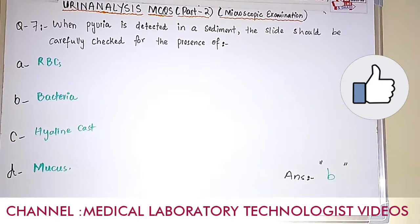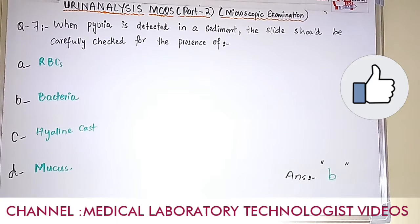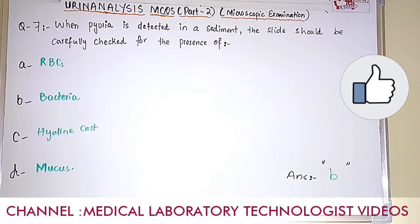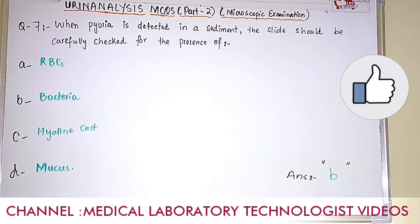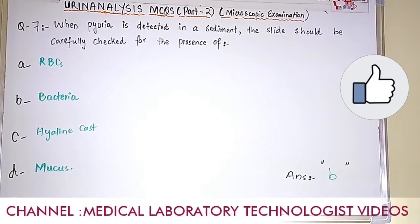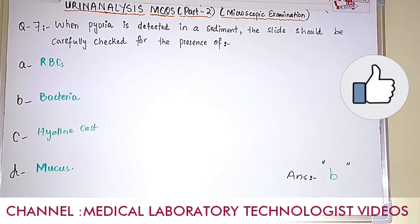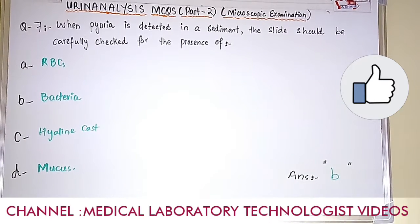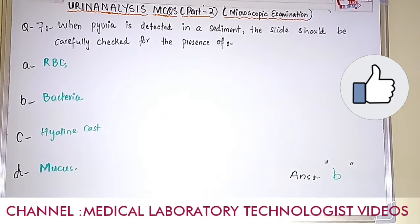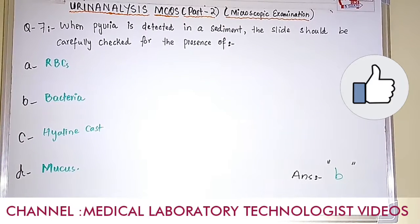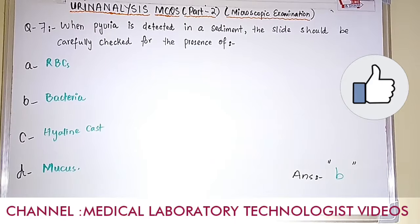Question number 7. When pyuria is detected in a sediment, the slide should be carefully checked for the presence of. Pyuria means the presence of pus cells in the urine. Option A: RBCs. Option B: bacteria. Option C: hyaline cast. Option D: mucus. The answer is option B, bacteria. Because pyuria — the presence of pus cells — is mostly indicative of bacterial infection. So when pyuria is detected in the sediment, you should carefully check for bacteria as well.